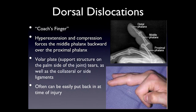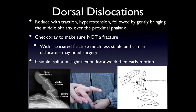Dorsal dislocations are when the middle knuckle dislocates out the back — this is the most common dislocation, also known as coach's finger. It happens a lot in sports: come off the sideline, pull it, pop it back in, go back and play. The mechanism is the same jamming force but more severe — the finger gets hyperextended, tears the volar plate, and pops out the back. When the bones fully bayonet — one sitting on top of the other — reduction requires first making the deformity slightly worse, perching the middle phalanx on the edge of the proximal phalanx, then flipping it over. If you reduce it, you must get an x-ray to rule out fracture.